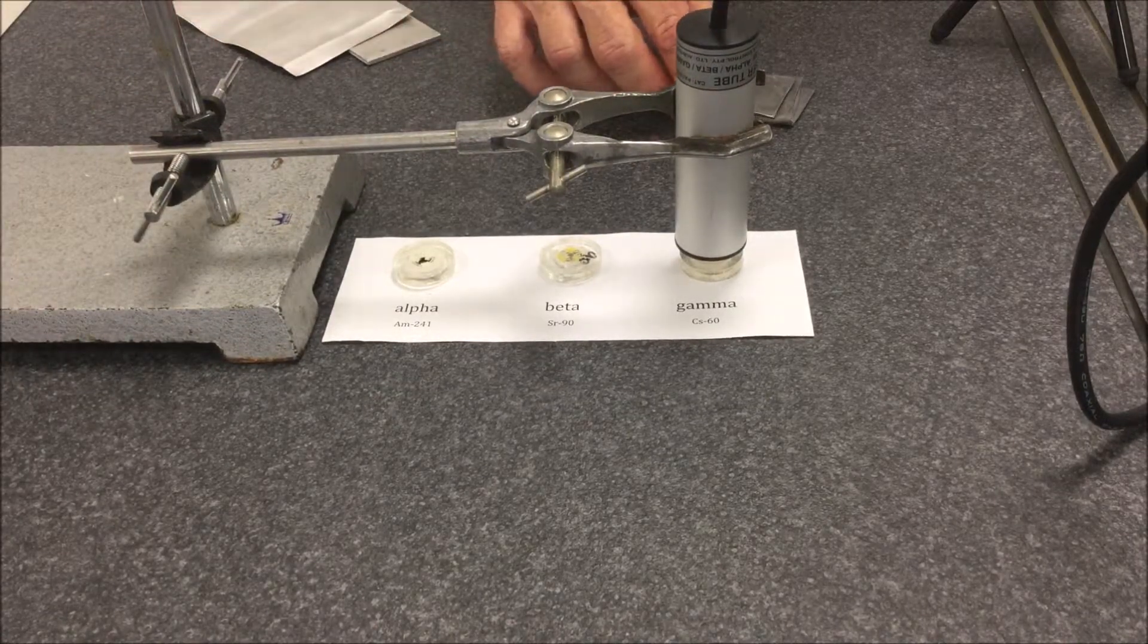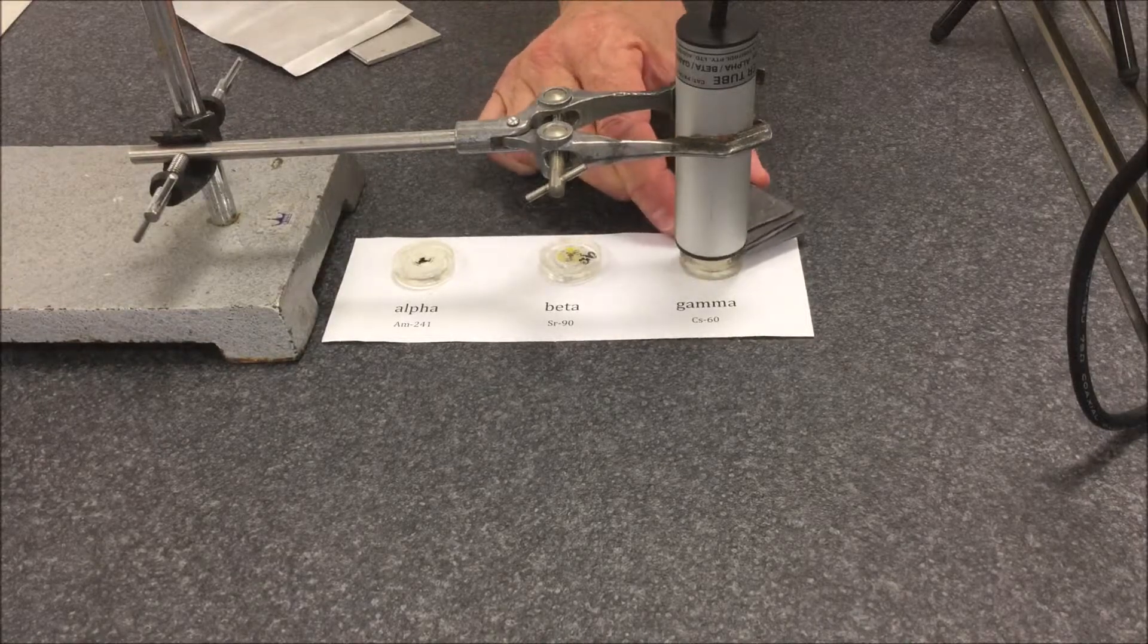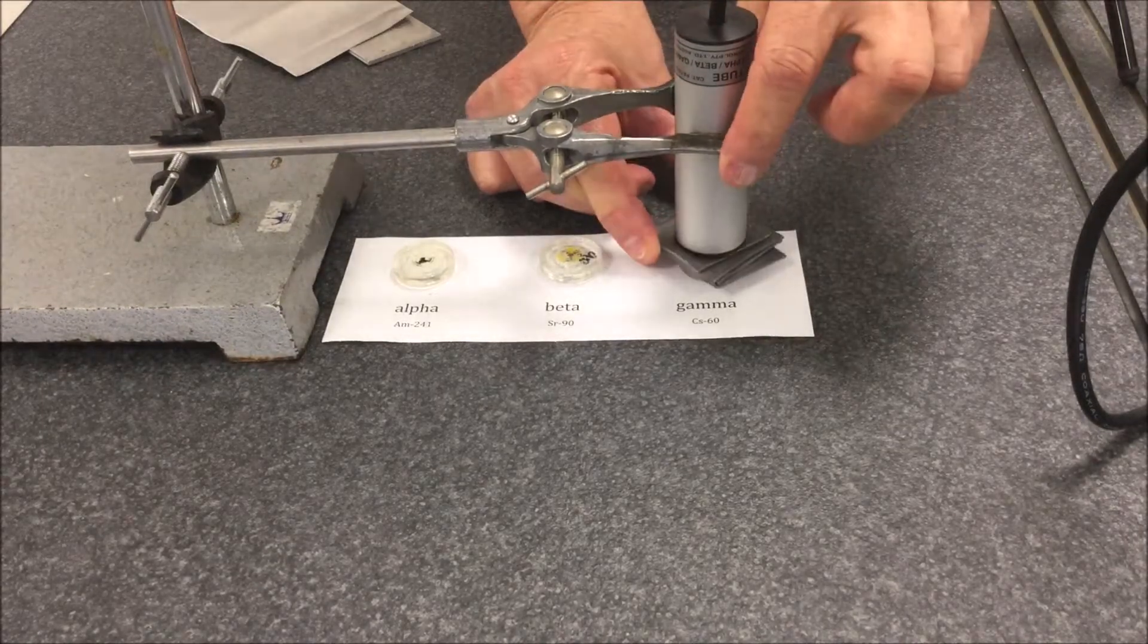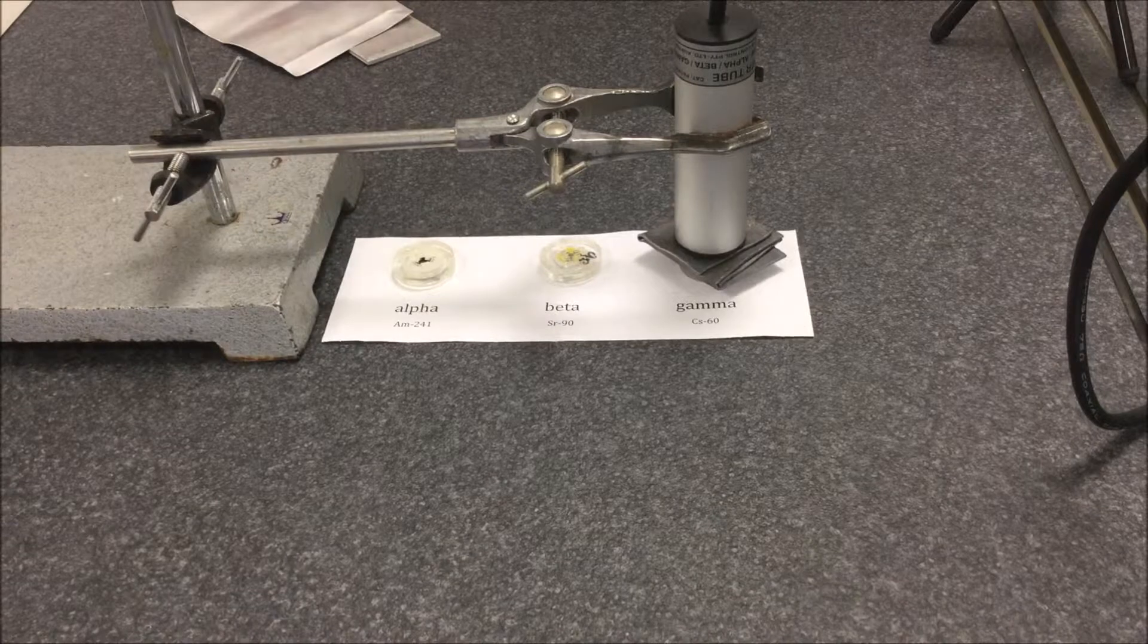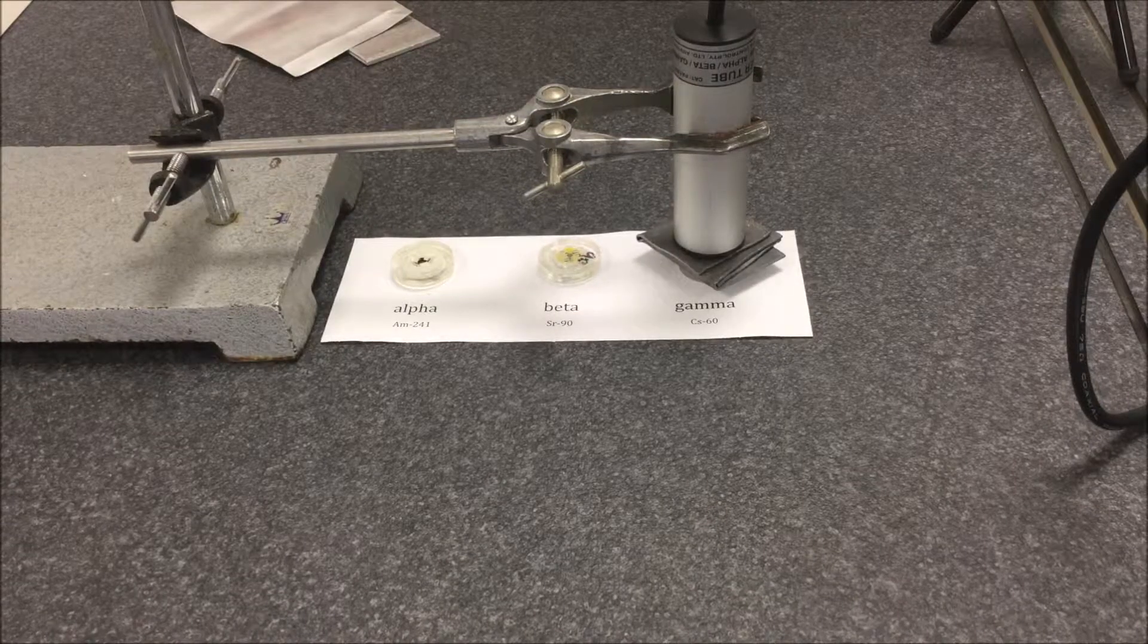Now, even a piece of lead, five millimeters thick, doesn't seem to stop it. So you need quite a few centimeters of lead to stop gamma particles.